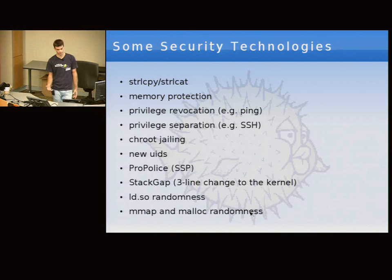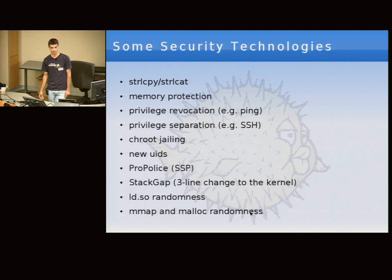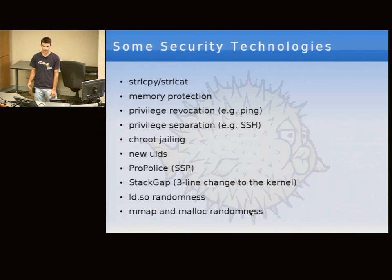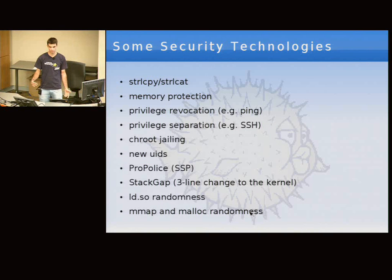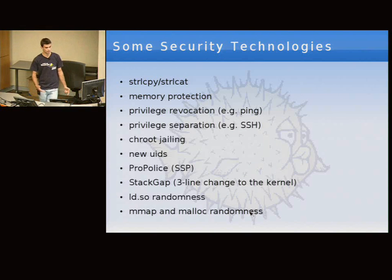For more complicated programs and daemons such as SSH that need root privileges throughout their lifetime, you can't simply drop privileges. So we developed a technique called privilege separation, which splits the application into two processes. One is really small and runs as root. The other contains 99% of the code and runs unprivileged. The main program runs unprivileged, and when it needs to do a certain task as root, it communicates with the privileged process over a socket pair. If you find and exploit a bug in 99% of the code in SSH, you only get an unprivileged user.